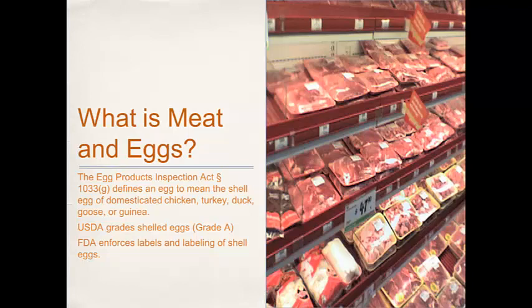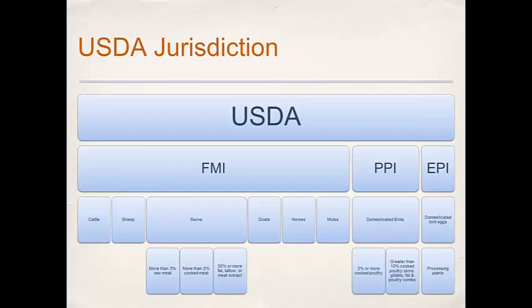I wanted to put up a chart from the FDA's Investigations Operations Manual — a manual given to FDA investigators going out to do inspections that tells them what they have authority to inspect and what they shouldn't. I'll put this PDF up in the lecture materials. Basically, it separates out where FDA jurisdiction is and where USDA jurisdiction is. I've distilled this into a chart to give a clear sense of what jurisdiction the USDA has under these different acts.